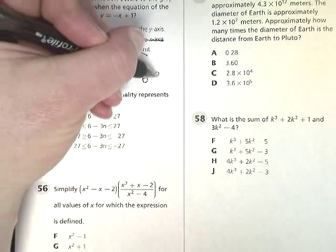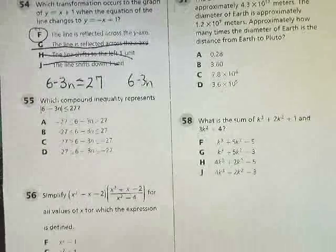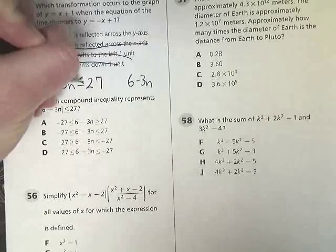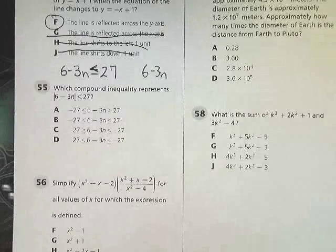And we simply make an adjustment for the component that's outside of the absolute value. So I'm going to keep 6 minus 3n and this is two problems. 6 minus 3n stays for both. Now in the original I'm going to keep the less than equal to 27 that I had in the first part.